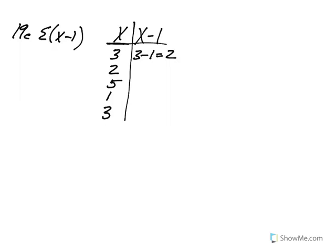I'm going to write it all out, although it's probably not necessary for you to do so. And then we have an x value of 2. Again, I'm just replacing variables. x, in this case, is equal to 2. So 2 minus 1 is equal to 1. 5 minus 1 is equal to 4. 1 minus 1 is equal to 0. 3 minus 1 is equal to 2.